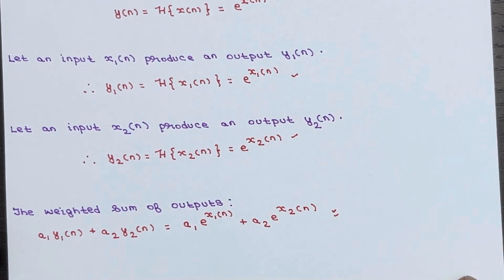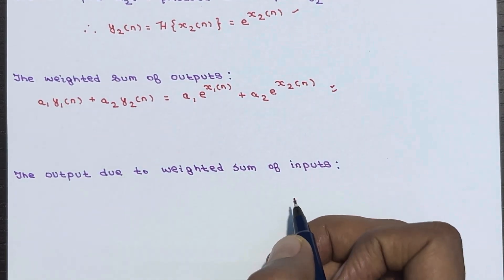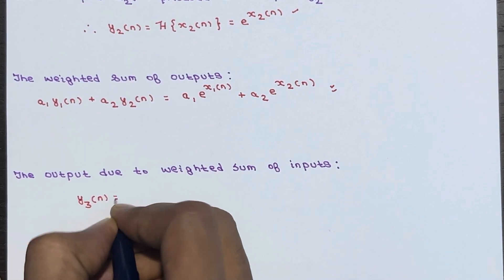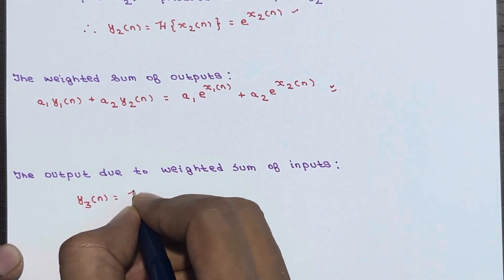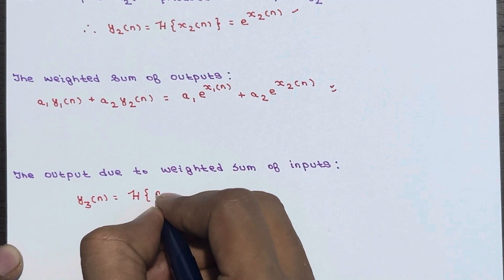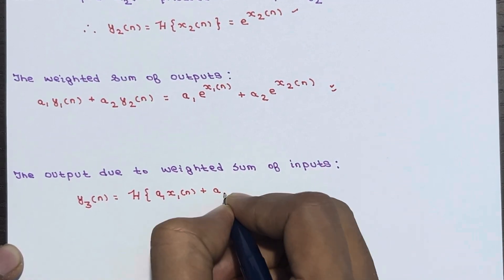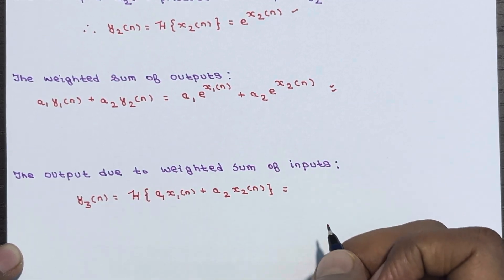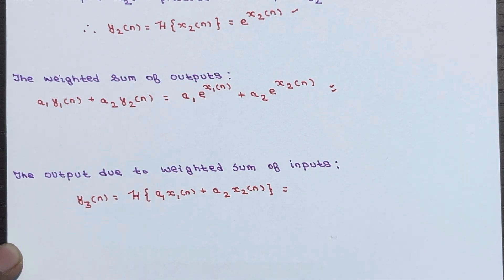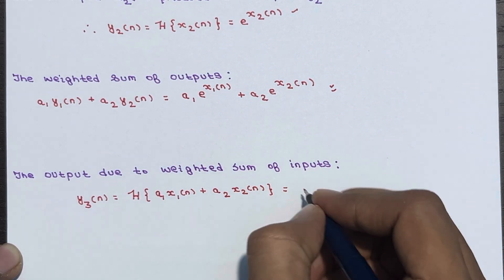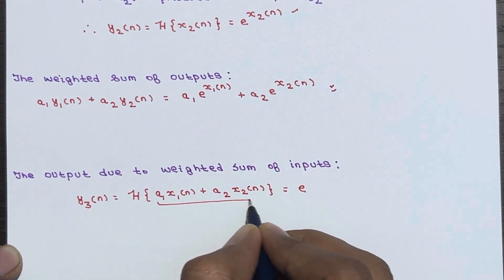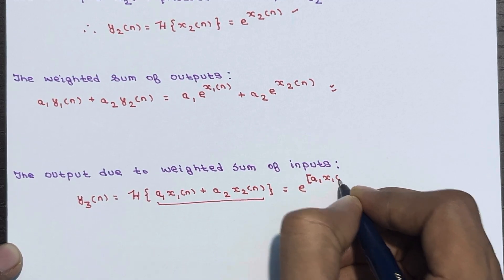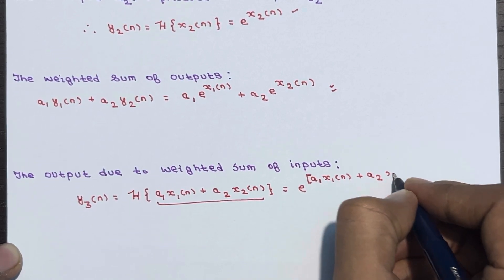Now let's calculate the output due to the weighted sum of inputs. Let the output be y3(n). This equals the transform of the weighted sum of inputs, which is a1·x1(n) + a2·x2(n). The general expression is y(n) = e^x(n), so y3(n) becomes e to the power of (a1·x1(n) + a2·x2(n)).